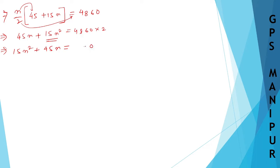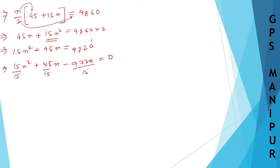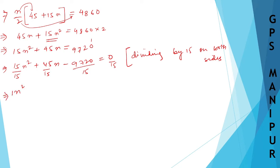So 15N squared plus 45N equals 9720. Transferring to one side: 15N squared plus 45N minus 9720 is equal to 0. Now let me divide by 15 on both sides. Dividing by 15: 15 and 15 cancel, so it becomes N squared plus 3N minus 648 is equal to 0.